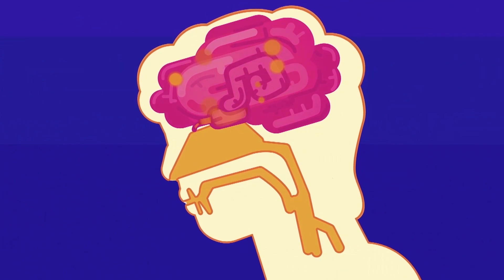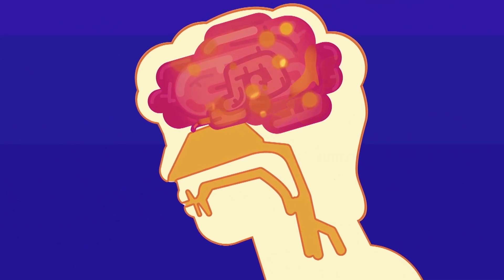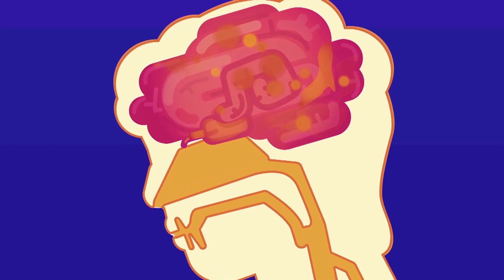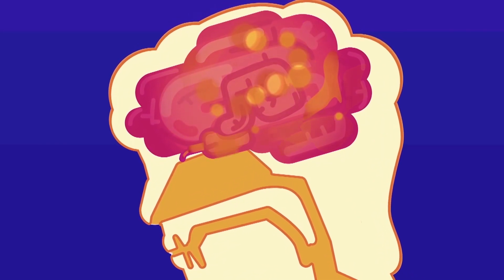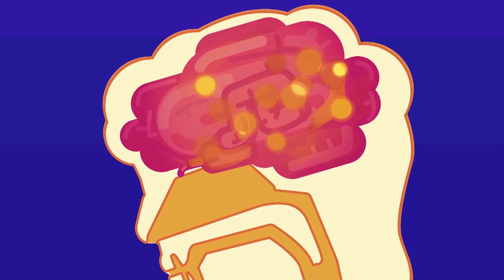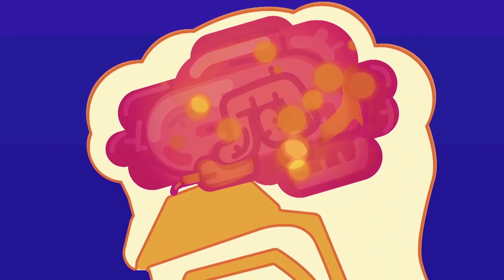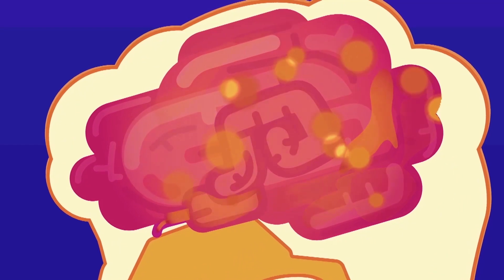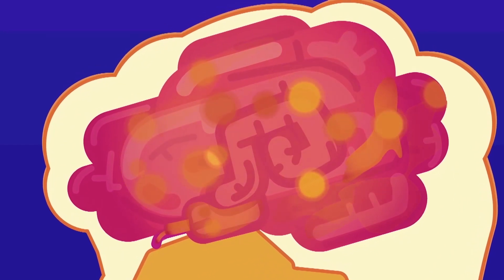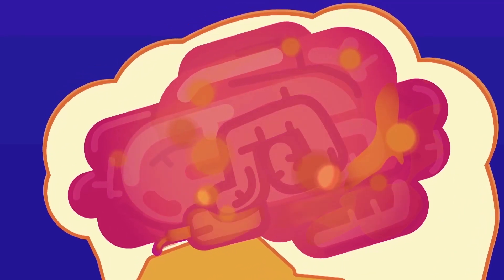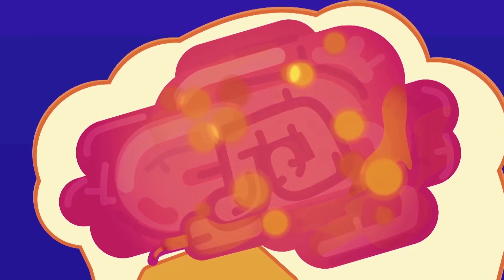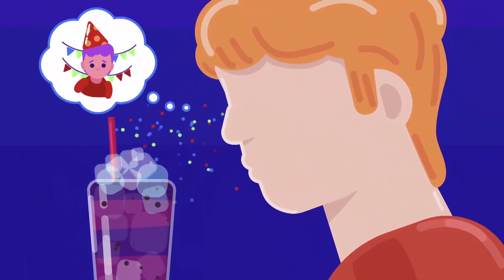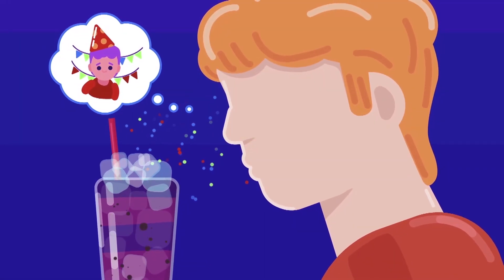Each odorant will activate a certain combination of olfactory neurons which will generate a unique pattern of electrical signals. Smell signals are first received in the olfactory bulb of the brain and then travel to the primary olfactory cortex region. From here, they are redirected to other areas of the brain where odors can be perceived consciously and also to areas of the brain responsible for emotions, memory storage, behavior and sensations. Because of this wiring, certain smells can bring forth strong memories and emotions.